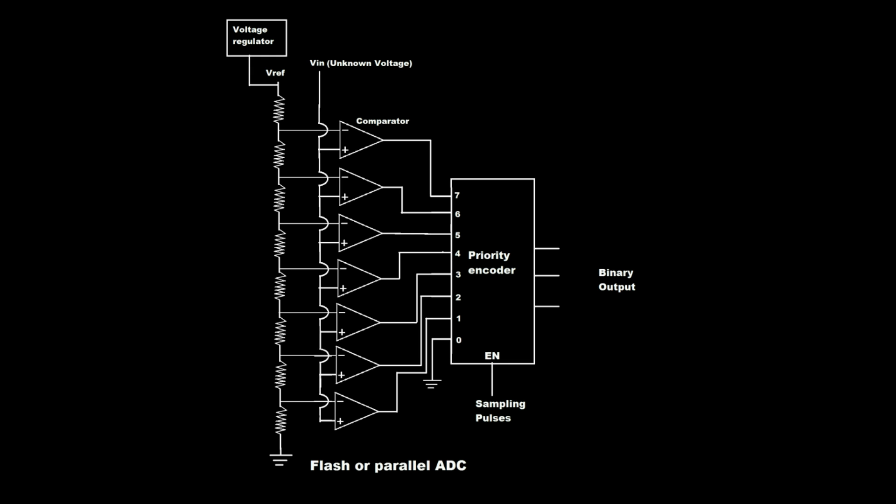Let 8 volts be applied to Vreference via voltage regulator. So the voltage drops are shown: 7V, 6V, 5V, 4V, 3V, 2V, and 1V. The comparators compare the reference voltage Vref and input voltage VIN.